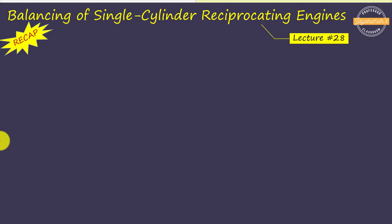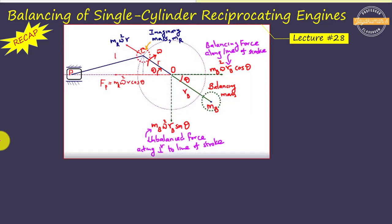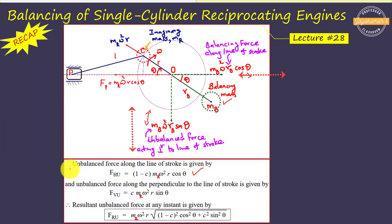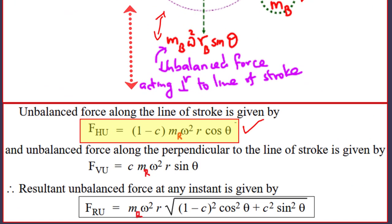In our earlier video, we discussed about balancing of single-cylinder reciprocating engines. We learned that complete balancing of a single-cylinder reciprocating engine is not possible. Even after the addition of a balancing mass, there will still be some unbalanced forces left along the line of stroke as well as perpendicular to the line of stroke. Using the equation F_HU = (1 − C) × m × ω² × R × cosθ, we can determine the magnitude of the unbalanced force along the line of stroke.